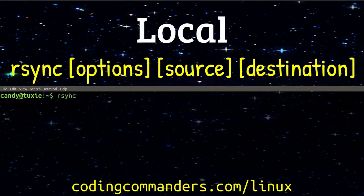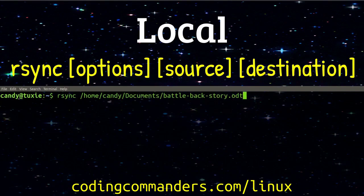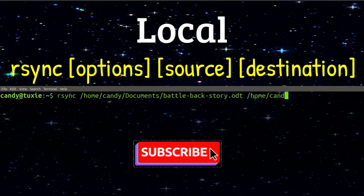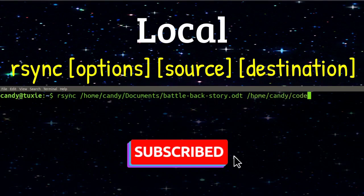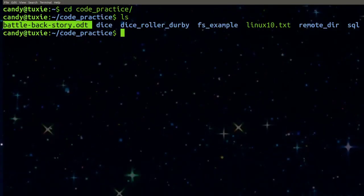Let's do an example where I'm taking one file inside a subdirectory of my home directory. I'm copying this file and putting a copy in another subdirectory inside my home directory. The file I'm copying is called battlebackstory.odt. It's located in my documents directory and I'm moving a copy of it over to my code practice directory. Let's check up on it. Good.